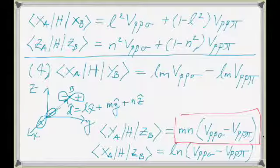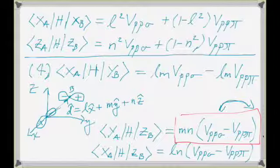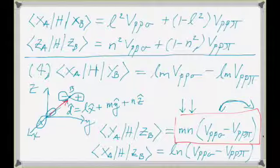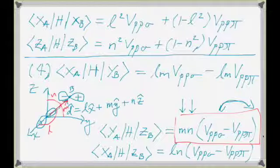We showed how to calculate the matrix elements between that A and B atom for the various orbital combinations — SP and PP orbitals — and how all these matrix elements can be written in terms of PP-Sigma, PP-Pi, SP-Sigma, etc., multiplied by some direction cosines. These are the cosines of the D vector connecting the B atom to the A atom — direction cosines L, M, and N with your X, Y, and Z axes, which are the components of your unit vector in the D direction.